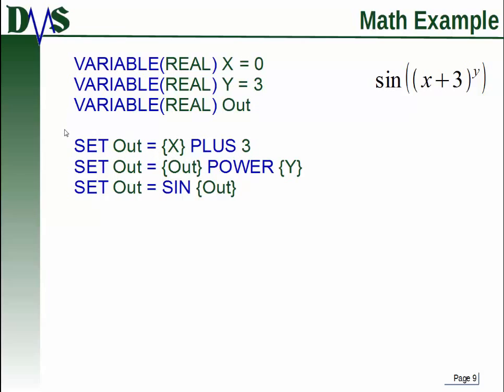So the first thing I do is SET Out equals x plus 3. And notice here how it worked. I set Out equals, but I'm using my variable in my code here. So that has the curly brackets. But the variable I'm assigning to does not have curly brackets. So Out equals curly brackets x plus 3.